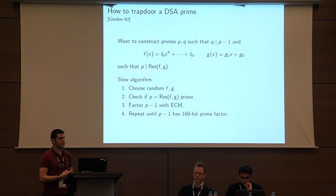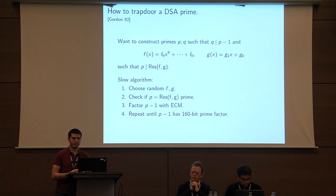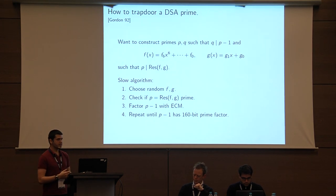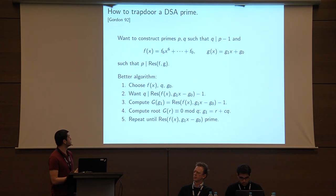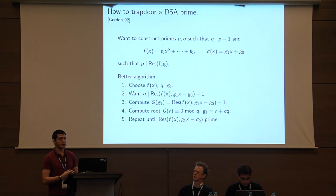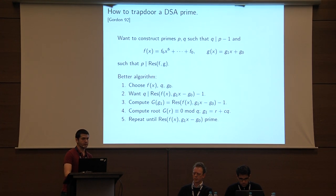Daniel Gordon in 1992 wrote a paper about trapdooring DSA primes. An easy way to start would be to pick some random pair of polynomials F and G with small coefficients, check if they share a common root that is prime, and if so, see if that prime has a subgroup of your desired order. Gordon also proposed an improved algorithm: define your problem in terms of a polynomial F with small coefficients, pick the subgroup order Q, try some random coefficient G0, and solve for G1 such that the resultant of your polynomials is prime and P minus 1 is divisible by Q.